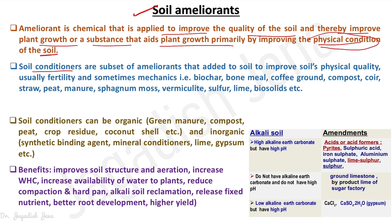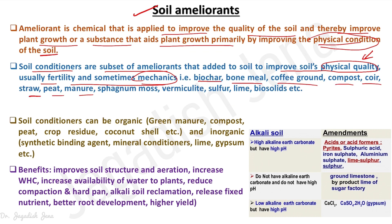Soil conditioners are the subset of ameliorant that are added to soil to improve its physical quality. When we talk about soil conditioner, it is mostly emphasizing the physical quality of the soil — usually fertility and sometimes mechanics. Examples include biochar, bone meal, coffee grounds, compost, coir, straw, peat, manure, sphagnum moss, vermiculite, sulfur, lime, and biosolids.